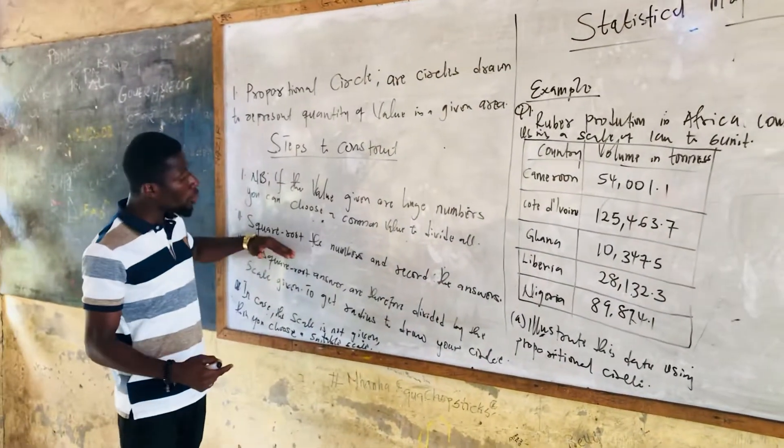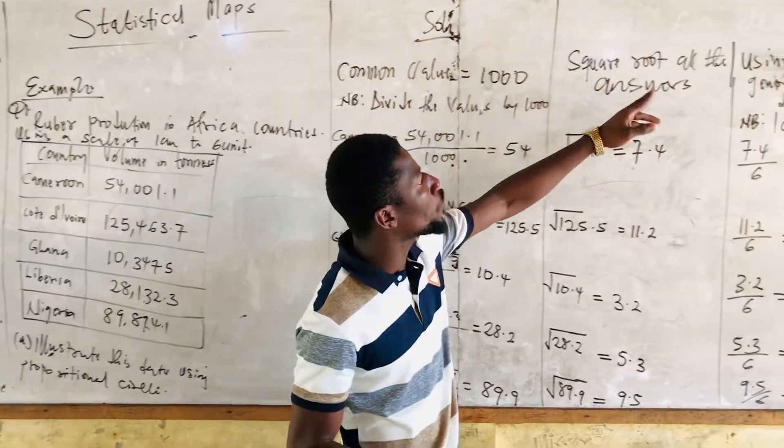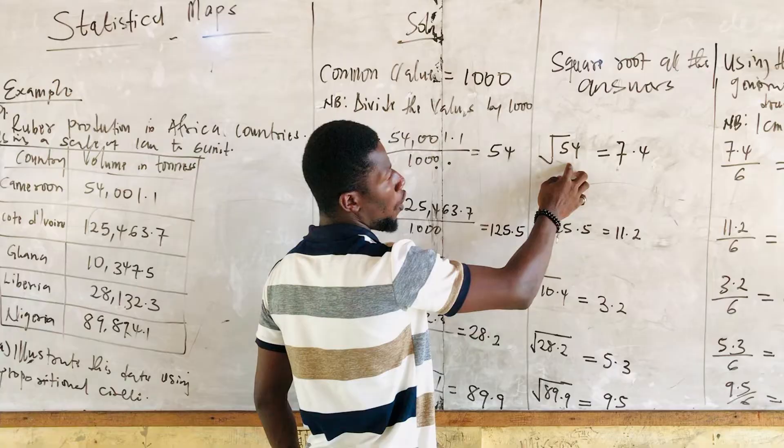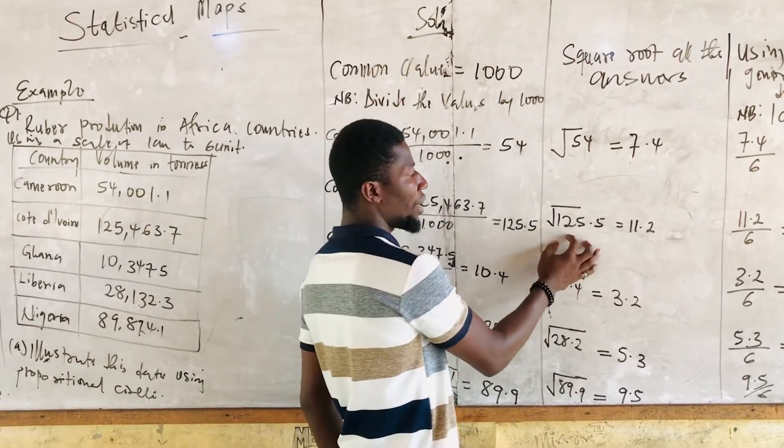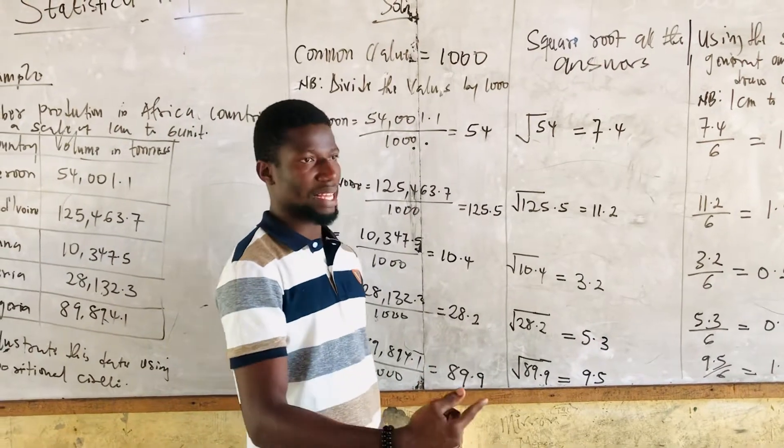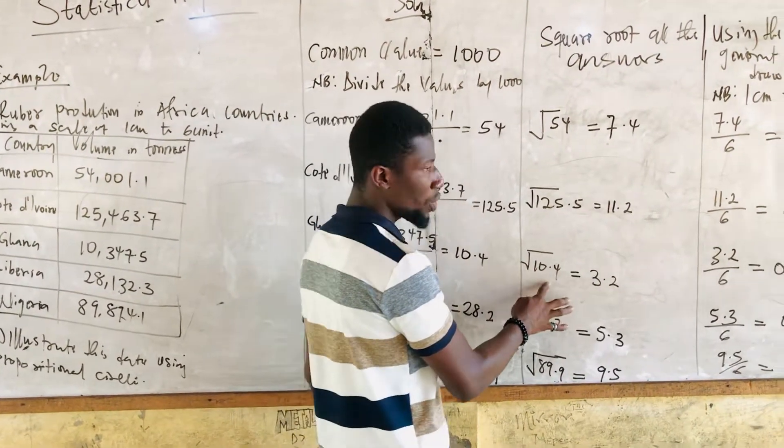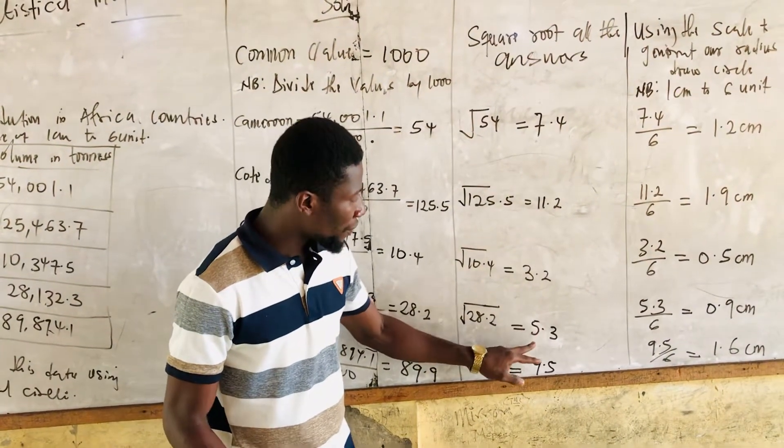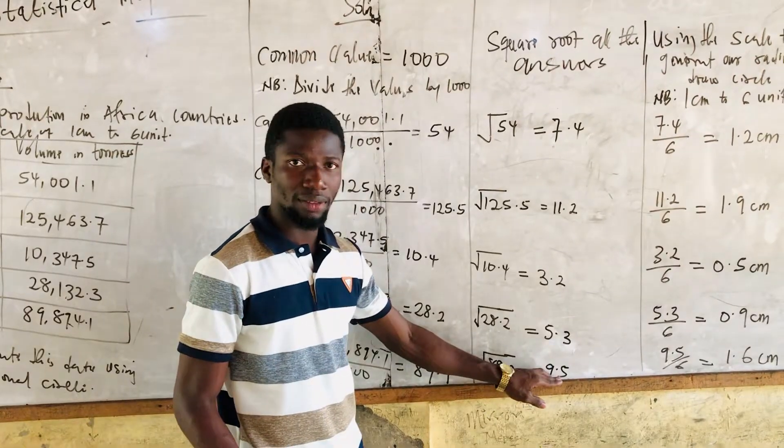When we come to step 2, it says square root the numbers and record your answers. We are going to square root all the answers. The square root of 54 is giving us 7.4. The square root of 125.5 is giving us 11.2. We are rounding all of them to 1 decimal point. The square root of 10.4 gives us 3.2. The square root of 28.2 gives us 5.3. The square root of 89.9 gives us 9.5.